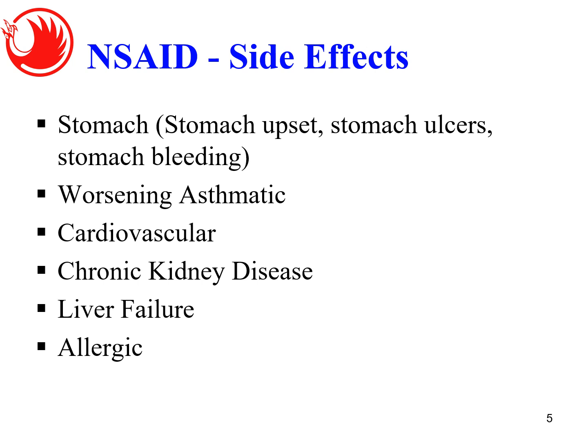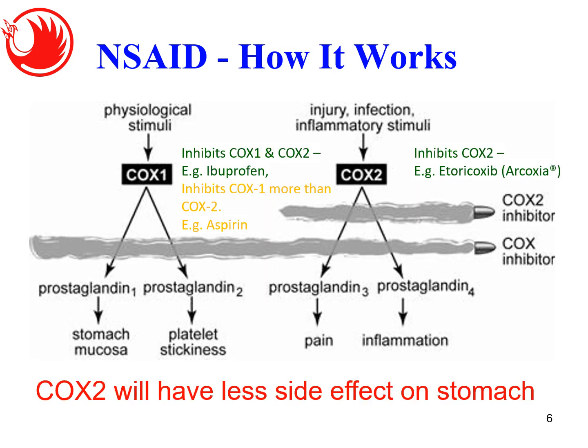Additional side effects of NSAID include worsening asthma, cardiovascular issues, chronic kidney disease, liver failure, and even allergic reactions. NSAIDs can be classified into two groups: COX-1 and COX-2. For drugs in both the COX-1 and COX-2 class together — such as ibuprofen and aspirin — the drug will affect the stomach mucus and also have a thinning effect. However, if you want a drug that only works on inflammation, it is best to use the COX-2 class, for example Arcoxia, which will have less effect on your stomach and is therefore a safer option.